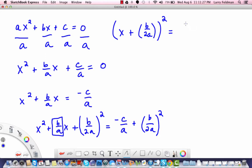The right side we're going to simplify a little bit further: negative c over a plus b over 2a quantity squared. Now that becomes b squared over 4a squared. So b over 2a quantity squared means we square the numerator and square the denominator, so we're left with b squared over 4a squared.